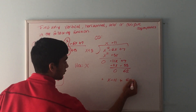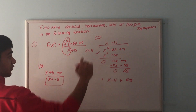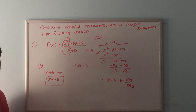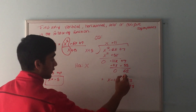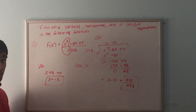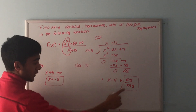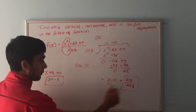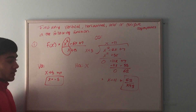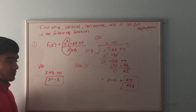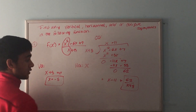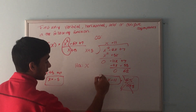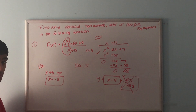So the result is x minus 11 with a remainder of 62 over x plus 5. When finding the oblique asymptote, we only need the polynomial part — the remainder term goes to zero as x goes to infinity, because the denominator grows without bound while the numerator stays at 62. So the oblique asymptote is y = x minus 11.